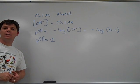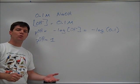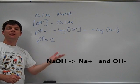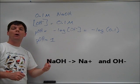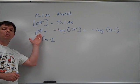Now let's consider a 0.1 molar solution of sodium hydroxide. Again, because this is a strong base, we will assume a 100% dissociation. This means that we will wind up with a 0.1 molar solution of hydroxide ions. We can find the pOH